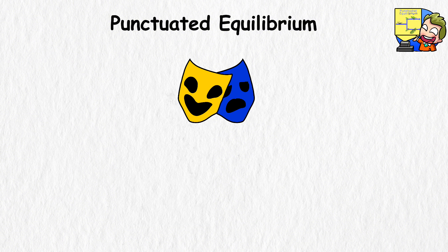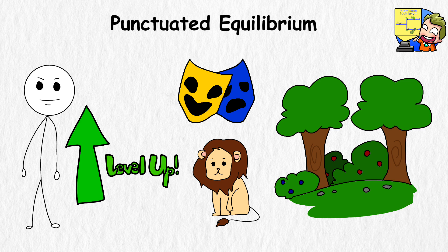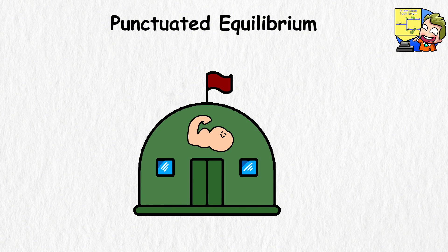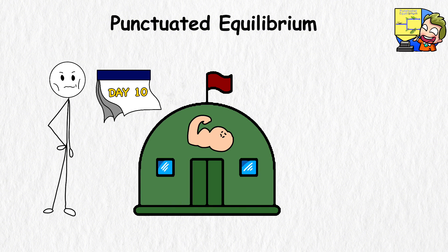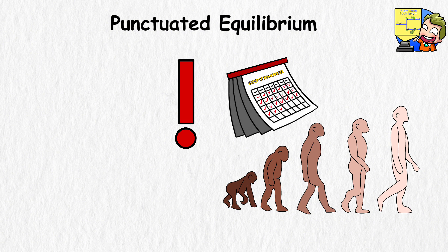But when something dramatic happens, like a sudden change in the environment or the introduction of a new predator, your body can evolve and adapt quickly, resulting in a burst of evolutionary change over a short period. It's like attending a fitness boot camp, where you lose 30 pounds in 10 days because you're forced to cut your calories by half instantly. These bursts of change are the punctuated part, and the long periods of little to no change are the equilibrium.